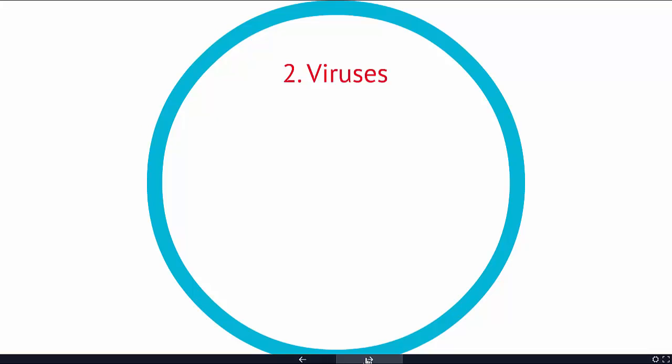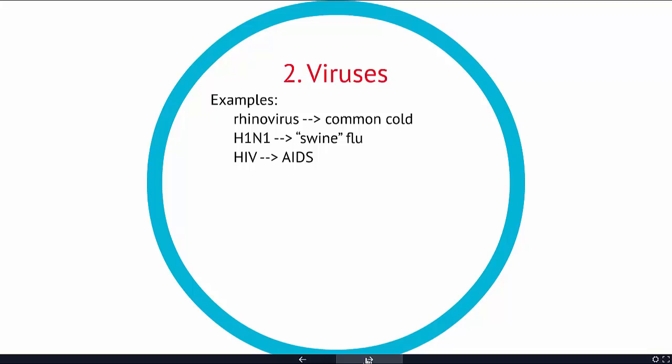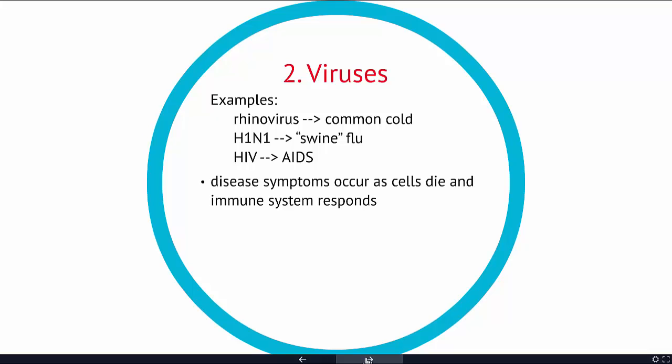The second kind of pathogen are viruses. The group of viruses that cause the common cold are the rhinoviruses. The swine flu was the H1N1 virus. AIDS is caused by the human immunodeficiency virus, or HIV. The diseases I mention here occur as our cells die and the immune system responds. A lot of the symptoms associated with a cold or flu are our body creating what feels uncomfortable, but it's our body trying to fight off that pathogen.